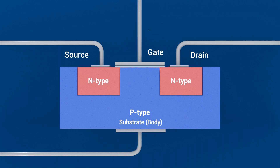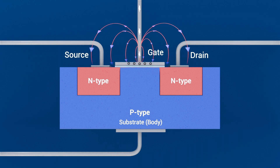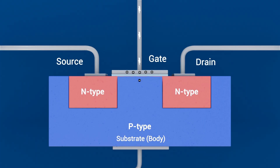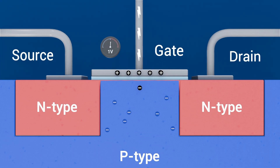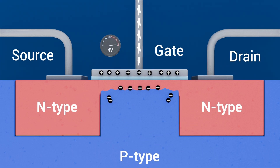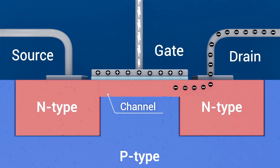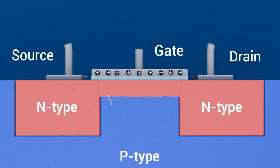If we apply a voltage between gate and source, an electric field forms across the oxide, inducing a conductive channel in the silicon between source and drain. If that gate voltage exceeds the threshold voltage, a channel forms and current can flow when you apply a drain-source voltage.